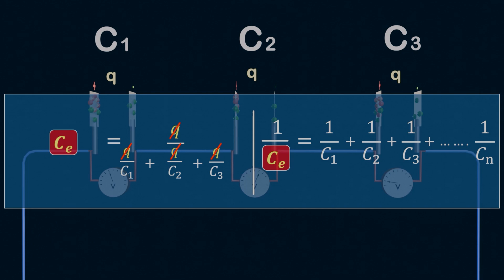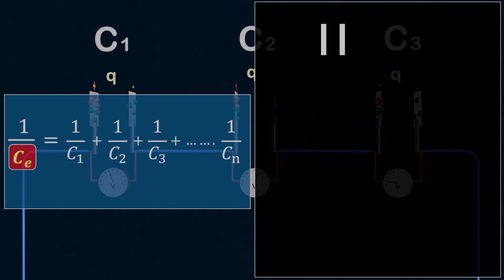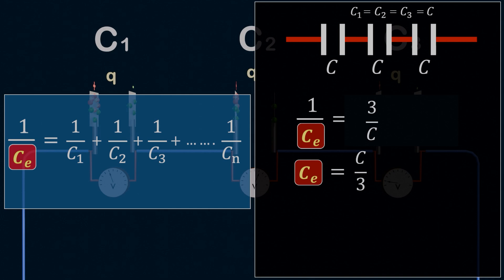Now, let's understand what happens to the overall capacitance in a series connection. Does the total charge storing capacity increase or decrease? To visualize this, imagine we have three capacitors, each of the same capacitance C, connected in series. Using the formula, we get 1 by CE equals 3 by C, which gives CE equals C by 3. So, we clearly see that the total equivalent capacitance decreases.